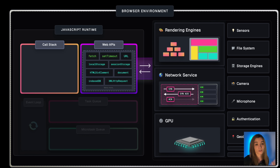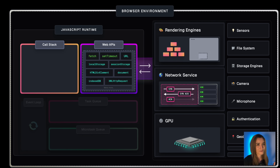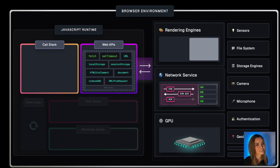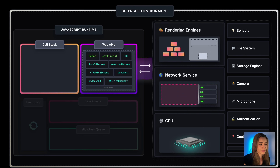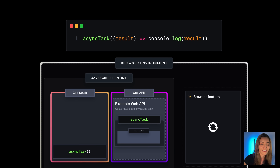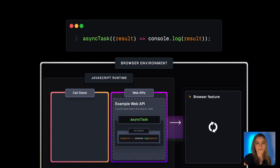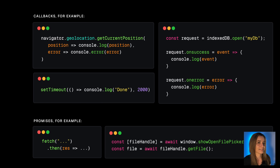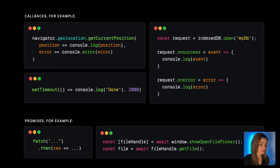The browser is a very powerful platform. Some features are required, like the rendering engine or the networking stack, but we also have access to cooler ones like device sensors, cameras, geolocation, and so on. Some of these web APIs allow us to offload long-running tasks to the browser. So when we invoke such an API, we're just initiating that offloading. Web APIs that expose these asynchronous capabilities are either callback-based or promise-based.